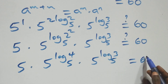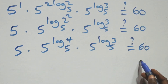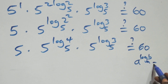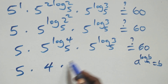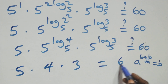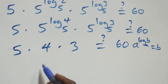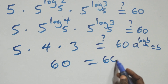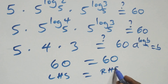Using the identity a raised to power log_a(b) equals b, we get 5 times 4 times 3 equals 60. Indeed, 5 times 4 is 20, and 20 times 3 is 60, which equals 60. The left-hand side equals the right-hand side, confirming our answer.